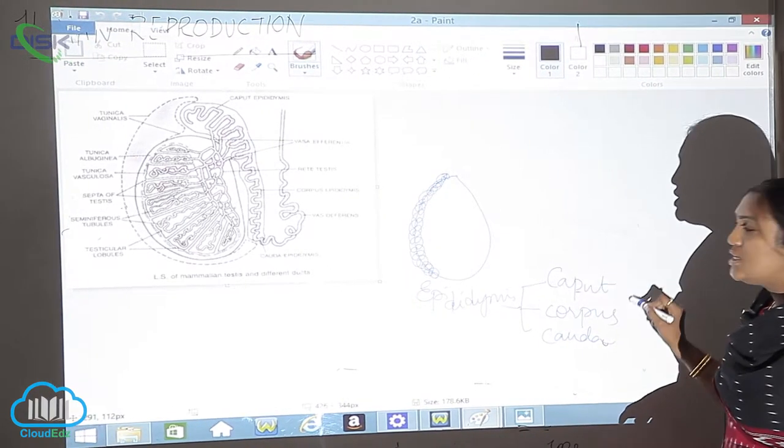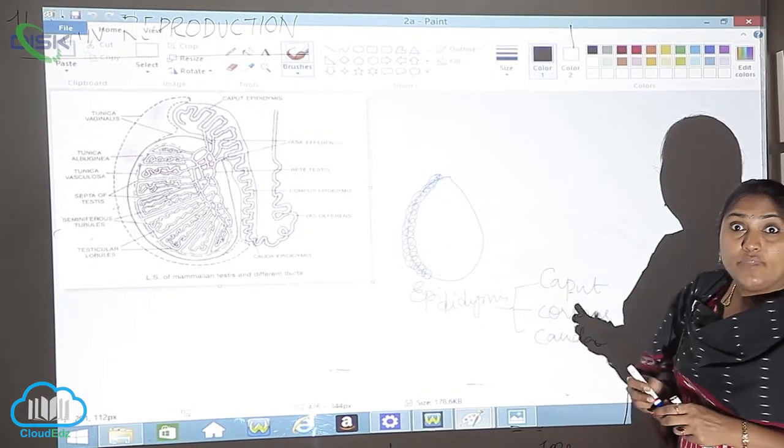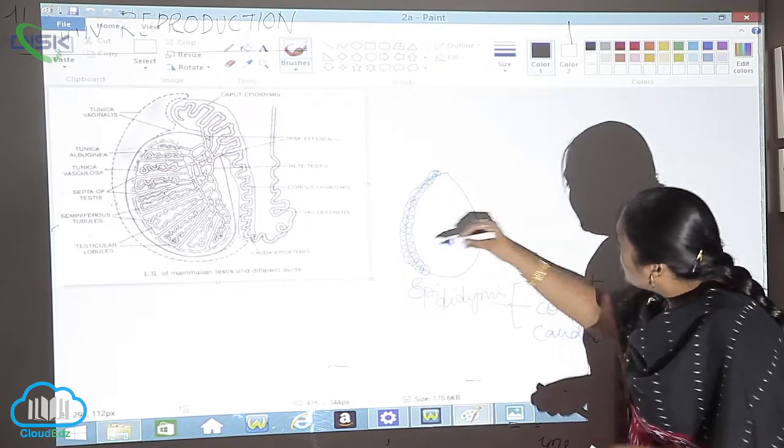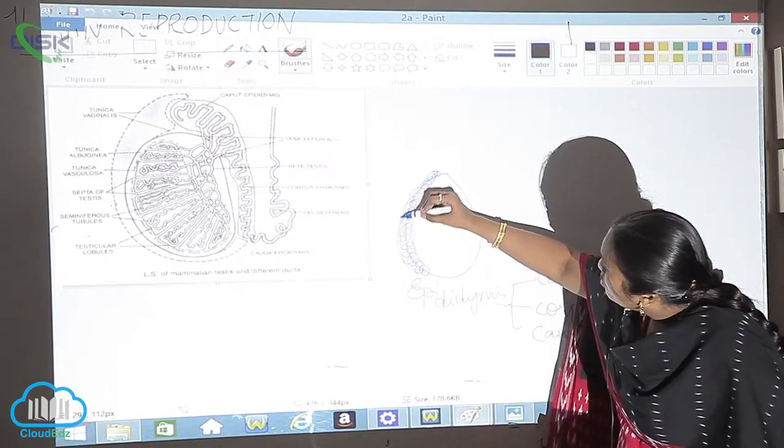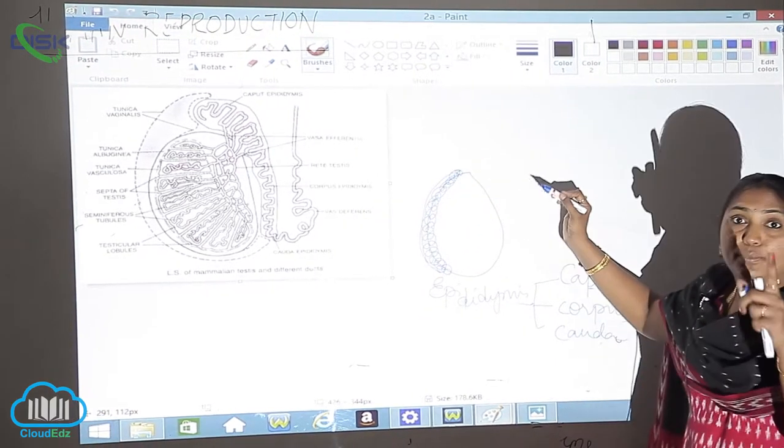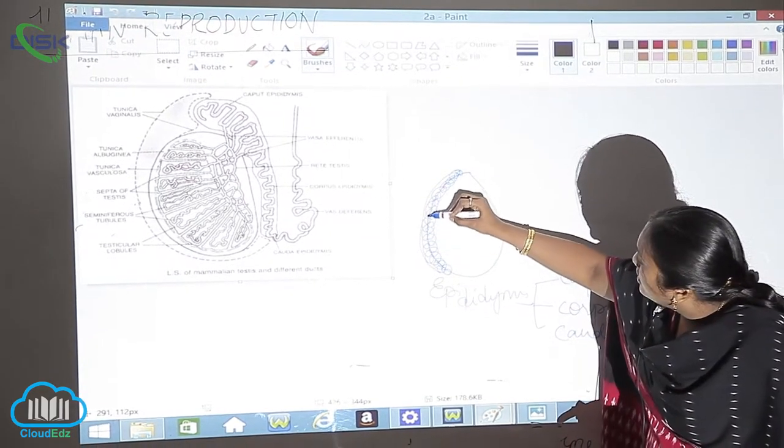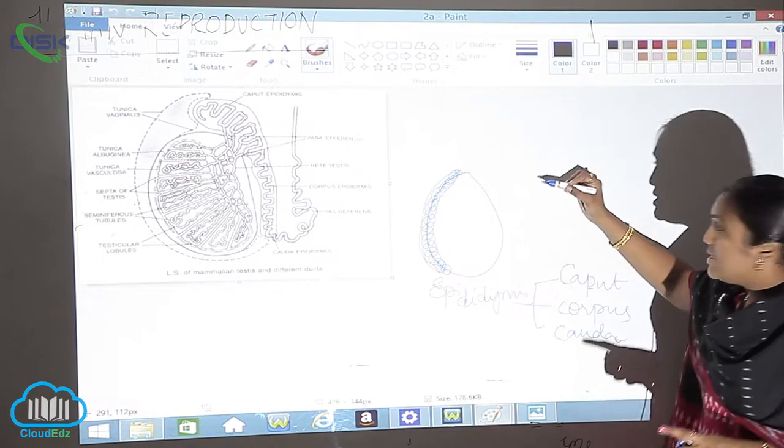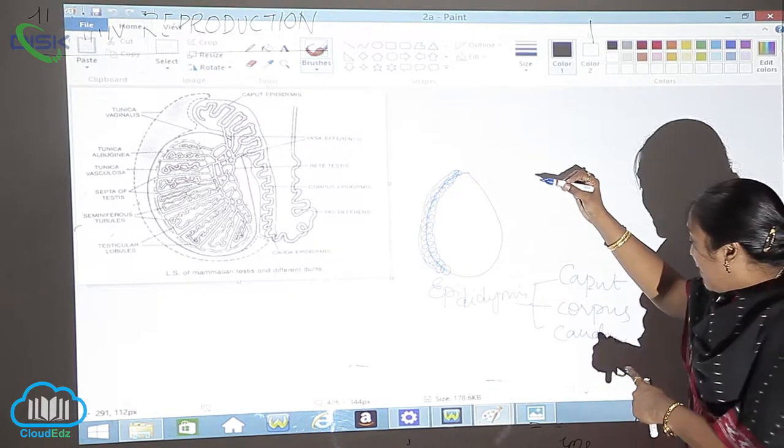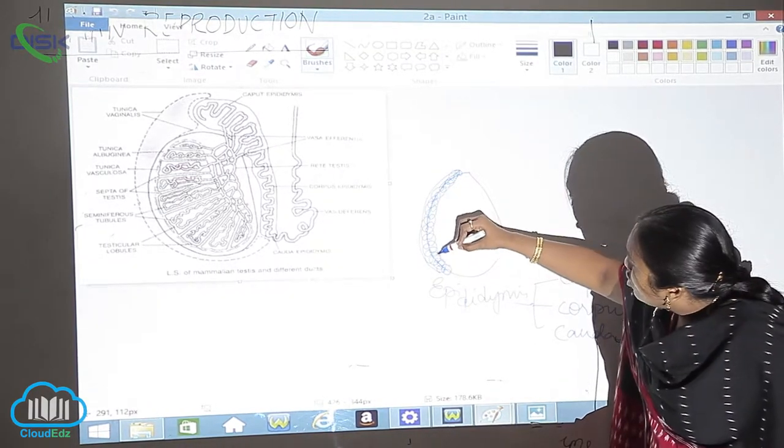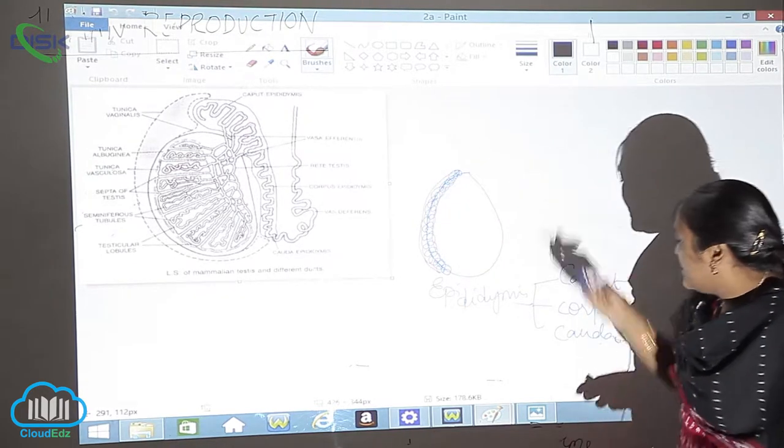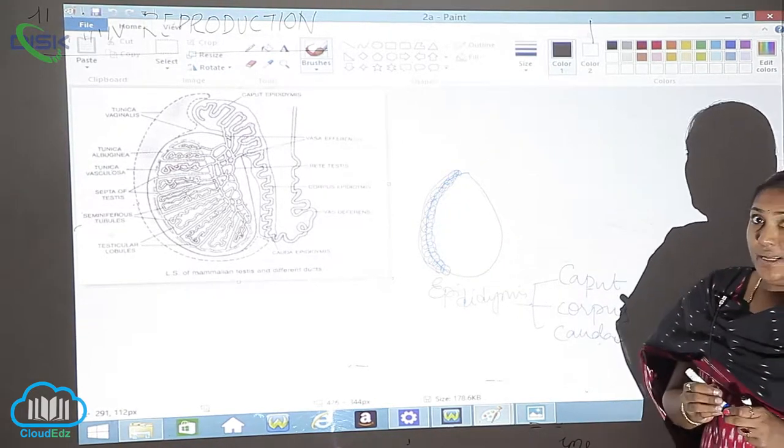The caput is the outermost region of the epididymis. The outermost layer, if you see this particular layer, is called caput epididymis. Corpus is this middle region, called corpus epididymis. And the innermost is called the cauda epididymis.